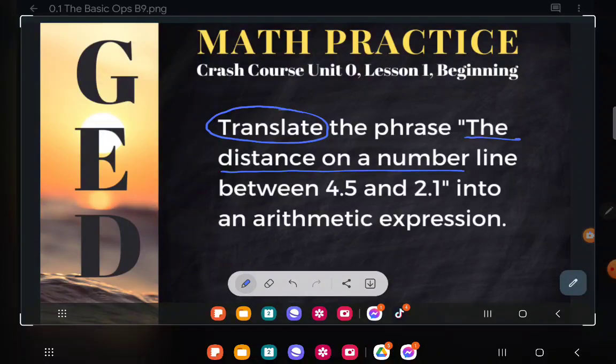the distance on a number line between 4.5 and 2.1. We're in English right now. But look, they tell me what they want me to translate it into. They'd like me to translate it into an arithmetic expression.